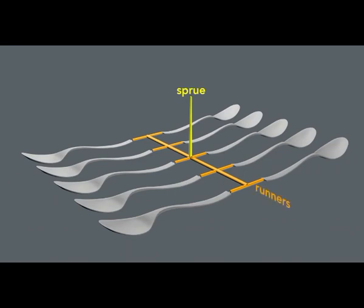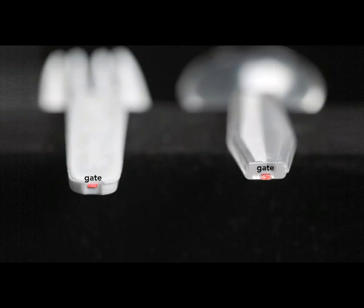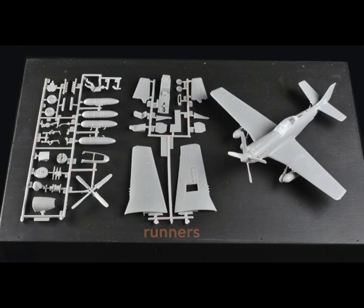The runners fan out from the sprue and connect to each cavity in the mold via a small, typically rectangular entrance called the gate. You can see the gate on plastic cutlery. The parts from model planes typically come still attached to their runners.